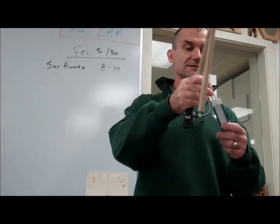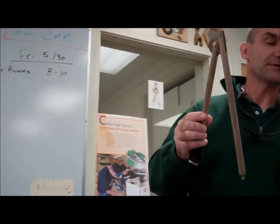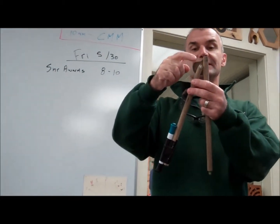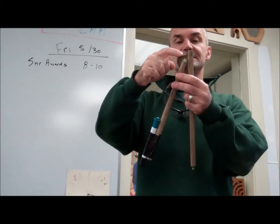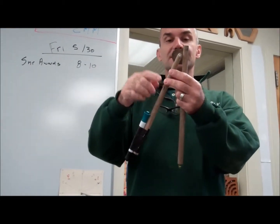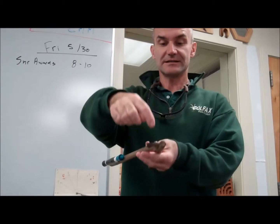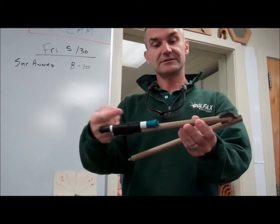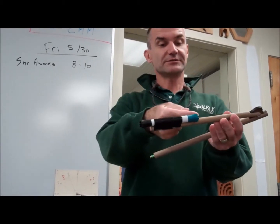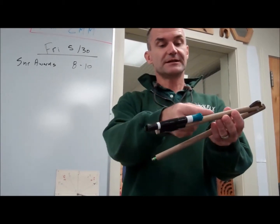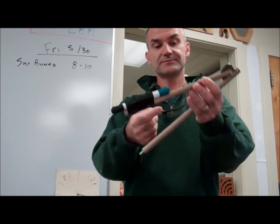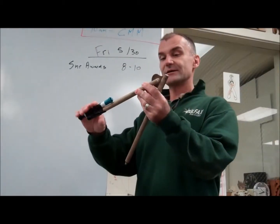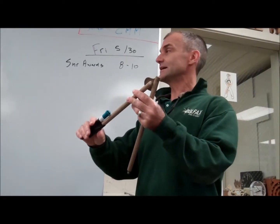So our next project is a wooden compass. This pivot joint right here is going to be made on the CNC. And then the bandsaw is going to cut these end pieces. And then you're going to use a drill to drill in a nail, and then the lead on this side.